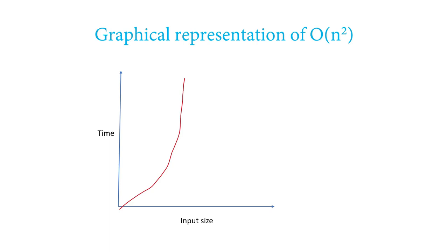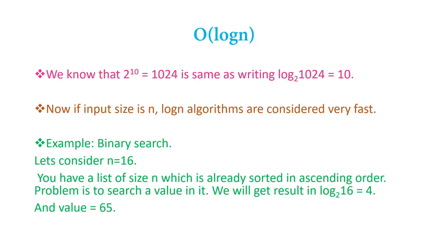So which Big O complexity is the best among what we've seen? The first we saw — Big O of 1 — is the best. Then comes order of N, then order of N squared. But there are some complexities I've missed. Big O of log N is another important time complexity we should know.